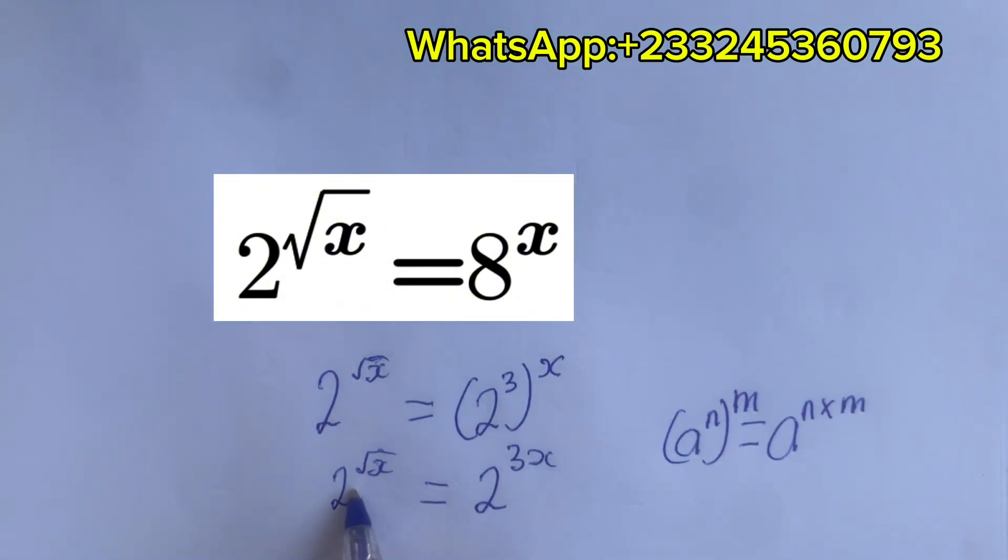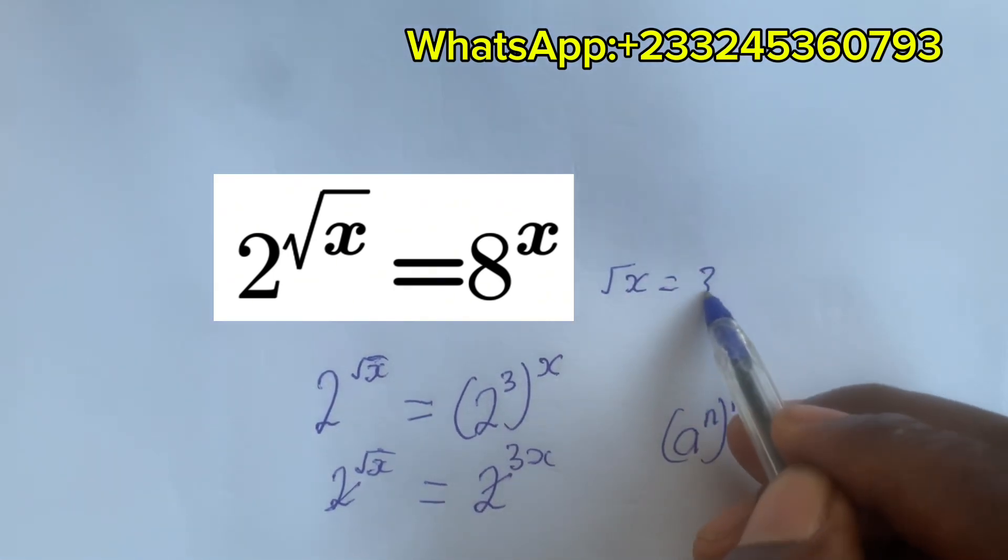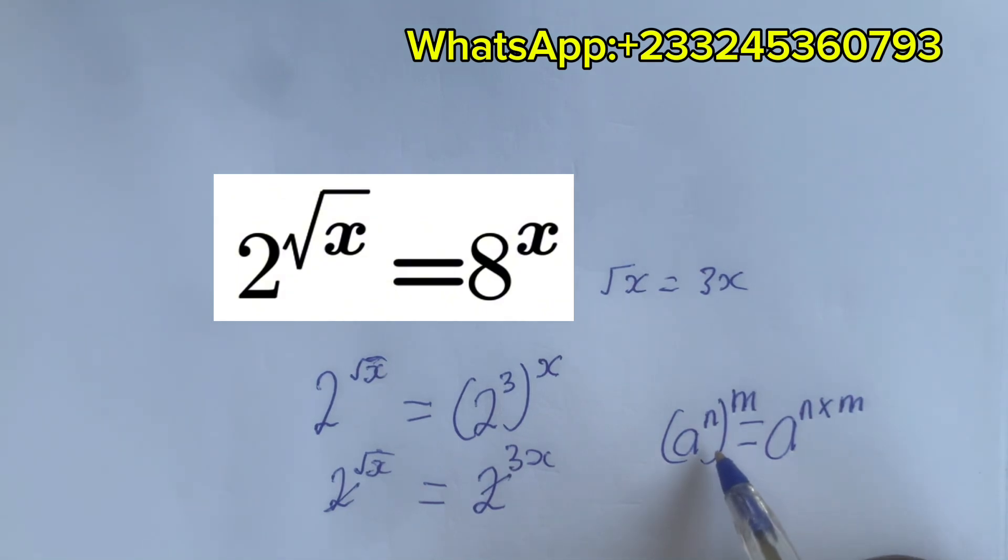So now you see that the base will cancel out because they are the same. So we're going to have √x equals 3x.